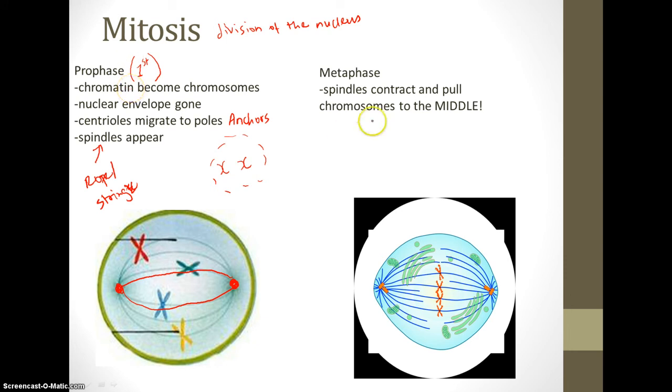In the second step, metaphase, the spindles contract and pull. They're tugging and pulling, which causes the chromosomes to align in the middle of the cell, kind of like a line on the equator. This is known as metaphase—meta meaning middle. Spindles contract and pull chromosomes to the middle or the equator.